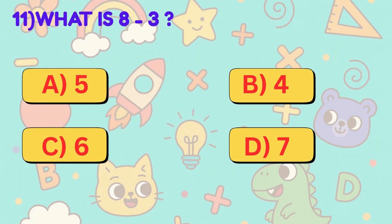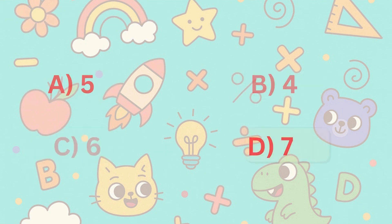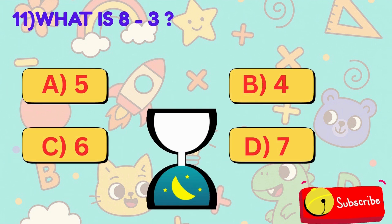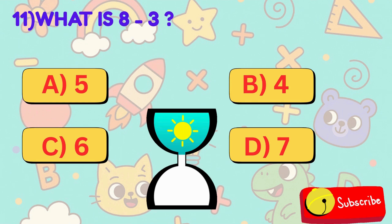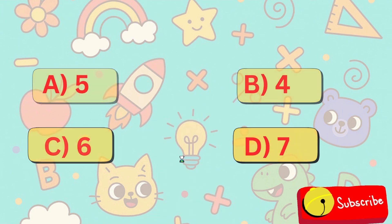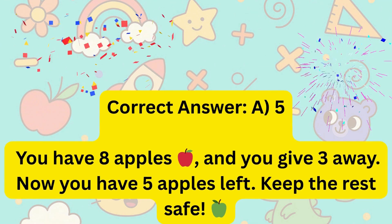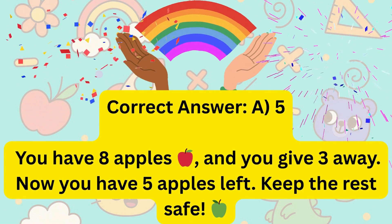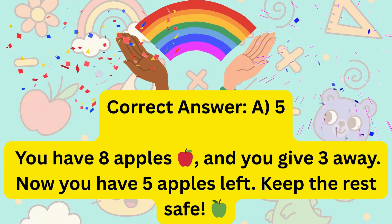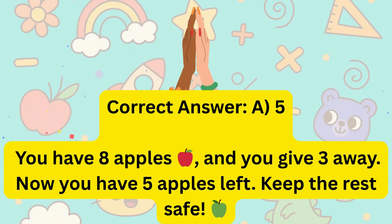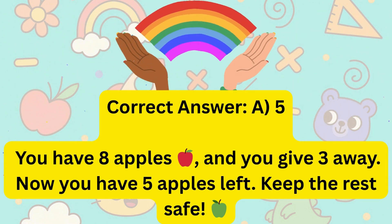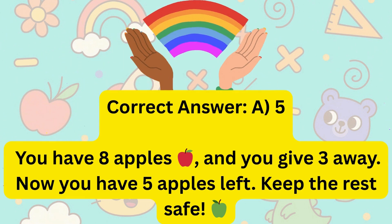11. What is 8 minus 3? Is it A, 5, B, 4, C, 6, or D, 7? Correct answer is A, 5. You have 8 apples and you give 3 away. Now you have 5 apples left. Keep the rest safe.